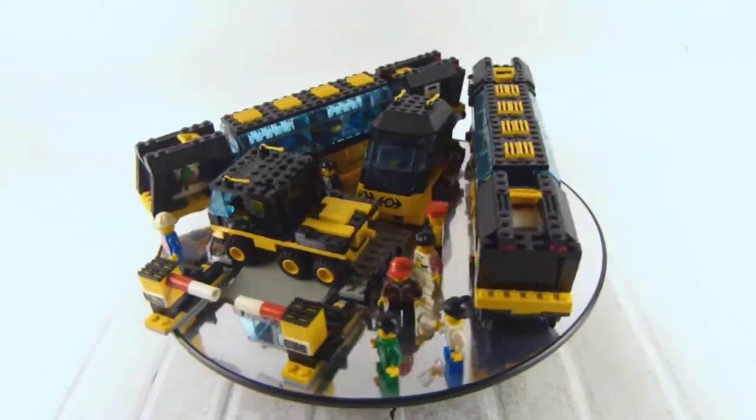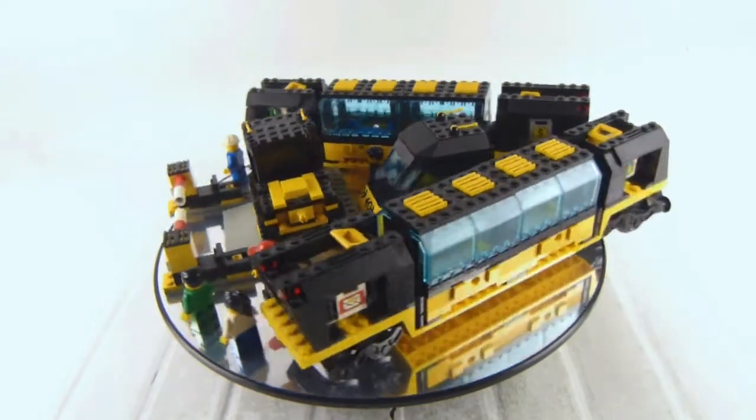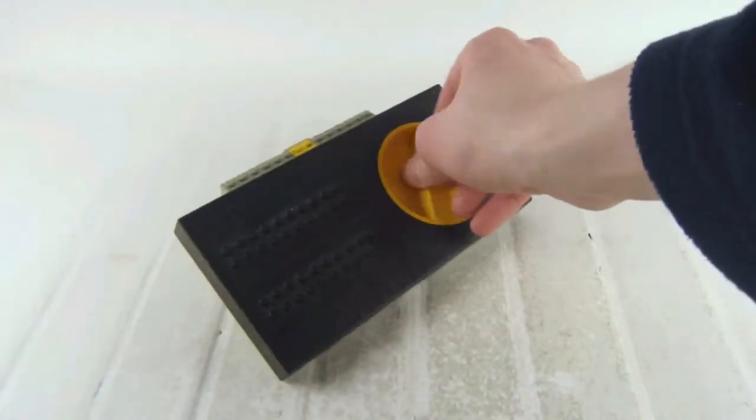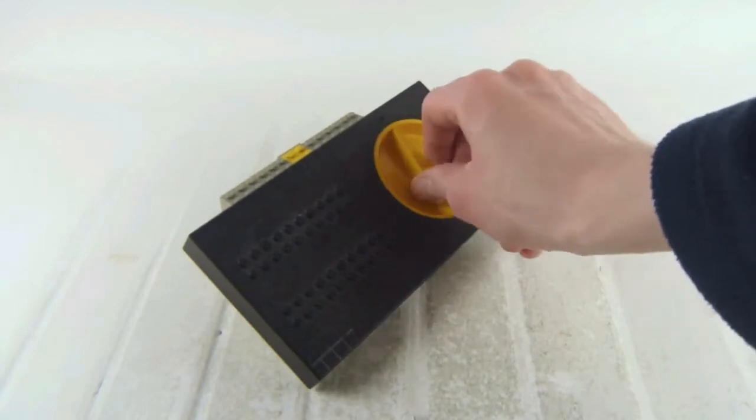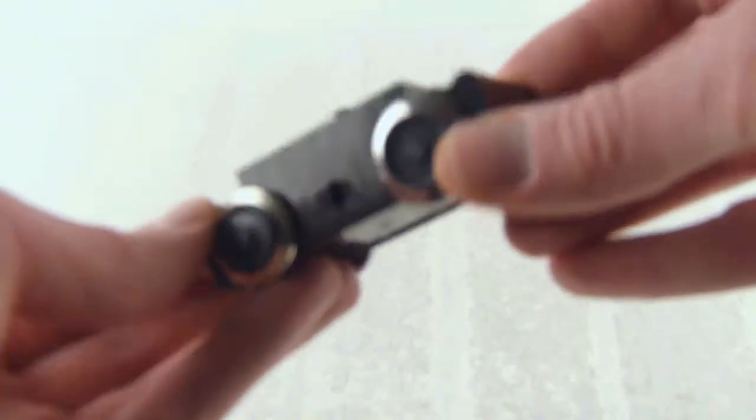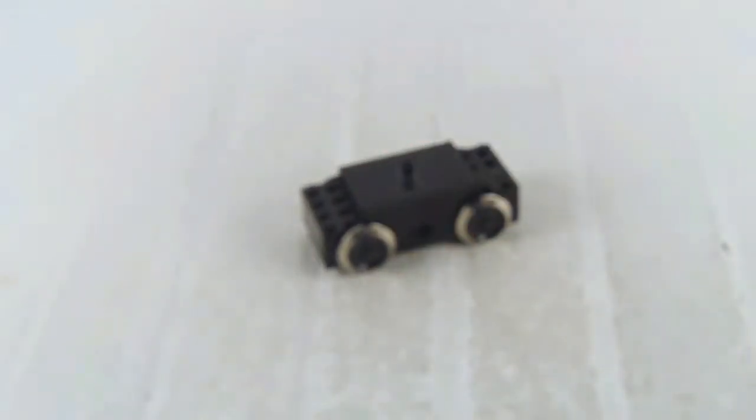It includes a complete train track system and the transformer, which is this big piece that can regulate power. We also get the battery box for the train, which is actually the brain of the train system.